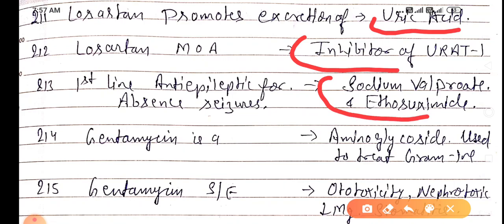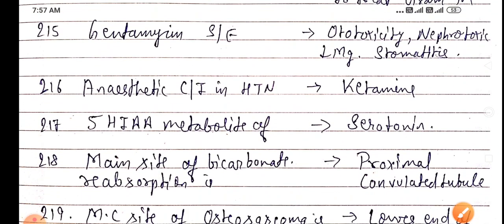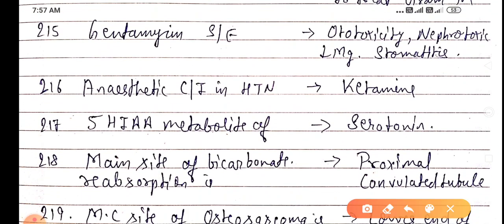Gentamicin is an aminoglycoside used to treat gram-negative infections. Gentamicin's side effects include ototoxicity, nephrotoxicity, stomatitis, and decreased magnesium.